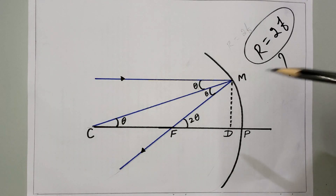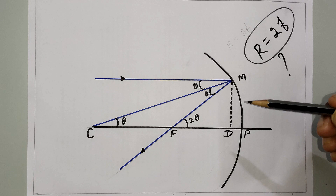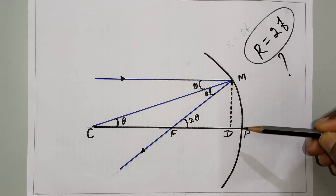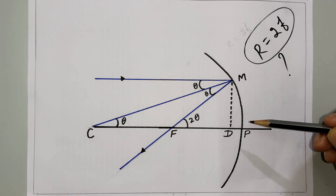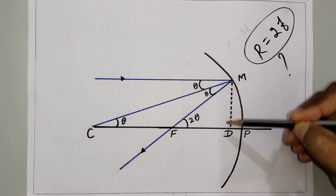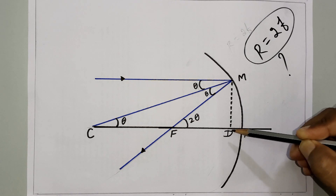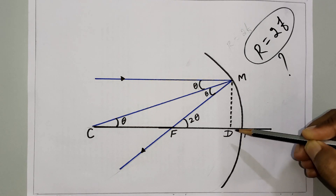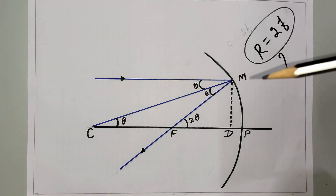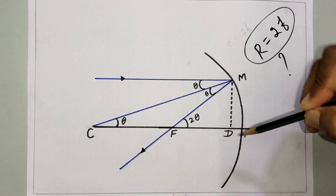One more important point: in a concave mirror we have a curved inner surface. For the next step, we draw a straight line from point M perpendicular to the principal axis; this touching point is called D. Now we can proceed to the derivation.